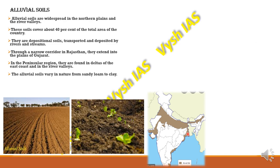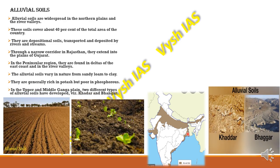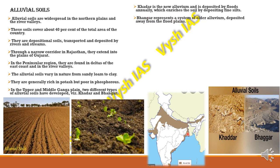Alluvial soils vary in nature from sandy to clay. They are generally rich in potash but poor in phosphorus. In the upper and middle Ganga plains, two types of alluvial soils are found: Khadar and Bhangar. Khadar is new soil deposited by annual floods, enriching the soil by depositing fine silts. Bhangar represents the old alluvial soil deposited away from the flood plains.